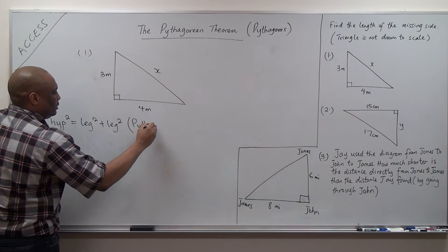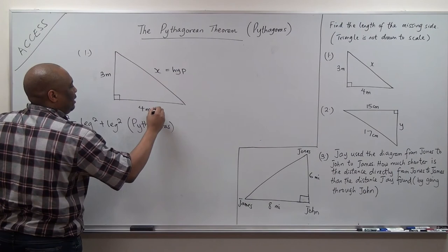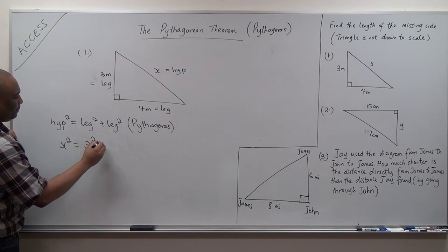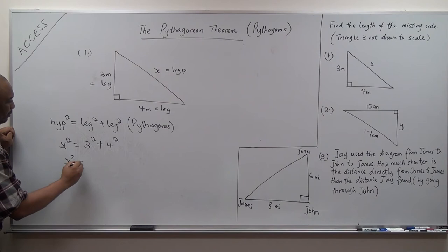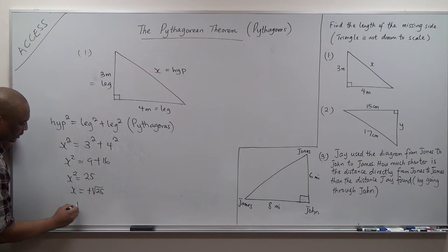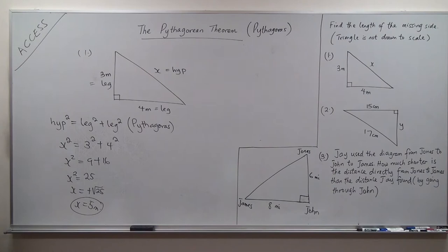I know that X is my hypotenuse. I know that 4 is my leg and 3 is also my leg. So this is now X squared equals 3 squared plus 4 squared. X squared equals 9 plus 16. X squared equals 25. So X equals the positive square root of 25, which is 5 meters. Make sure you put the unit — meters.